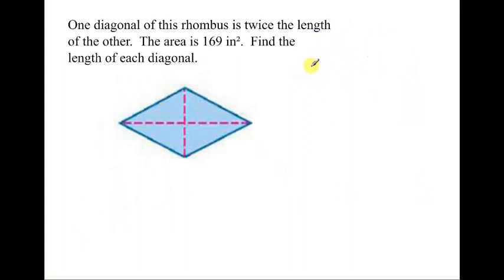One last practice problem with the diagonals, this time a rhombus. Let's read through it. One diagonal of this rhombus is twice the length of the other. The area is 169 square inches. So, find the length of each diagonal. What are they saying when they say one diagonal is twice the length of the other? They're trying to tell us that we have a short one, and we have a long one. But the long one's double the size of the short one. So, if we label this one as x then, this diagonal would be 2x. Let's get those labeled and let's see how our formula can help us.